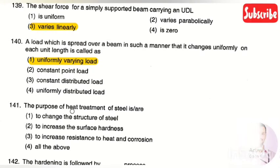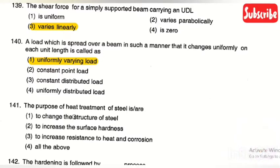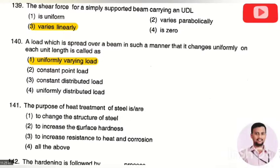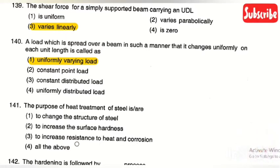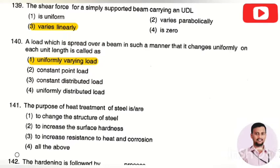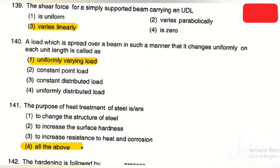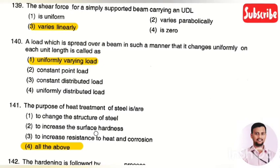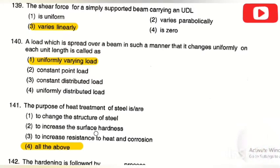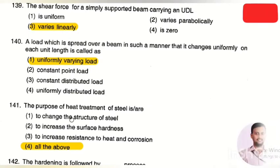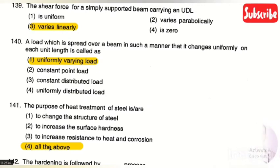The next question: the purpose of heat treatment of steel is — option 1: to change the structure of steel, option 2: to increase surface hardness, option 3: to increase resistance to heat and corrosion, option 4: all of the above. The right answer is option 4, all of the above. Heat treatment is done to improve mechanical properties and change the structure of steel.